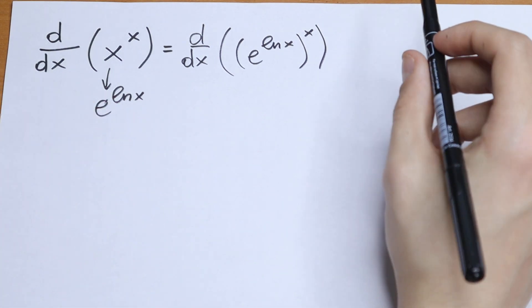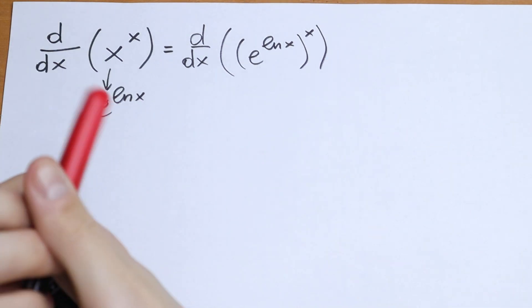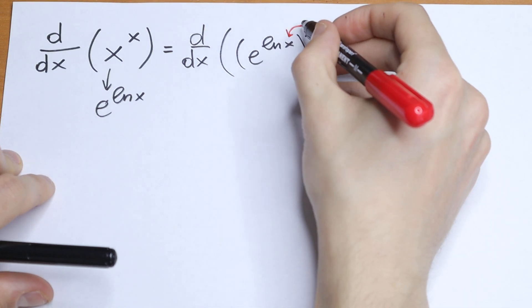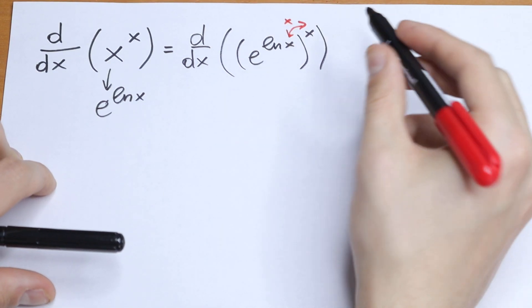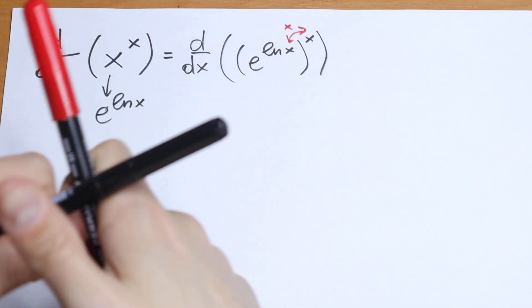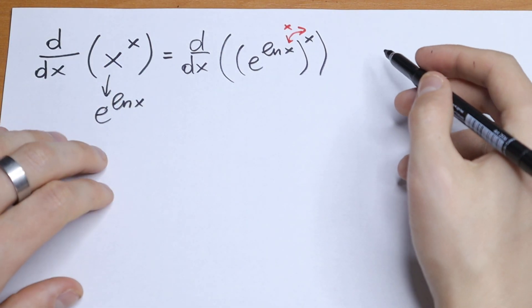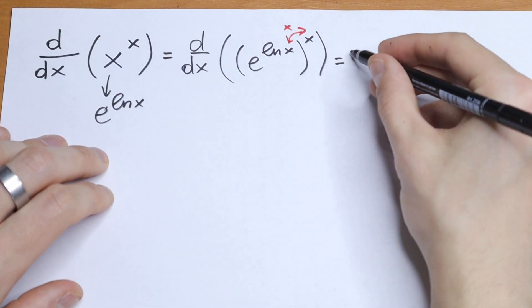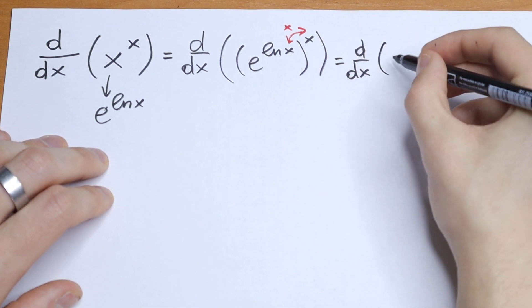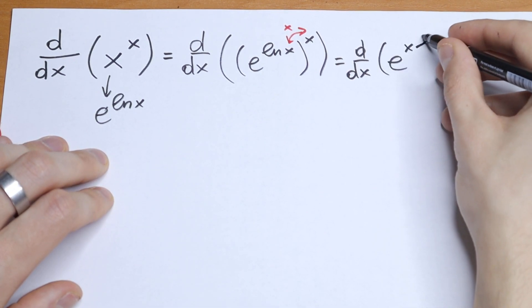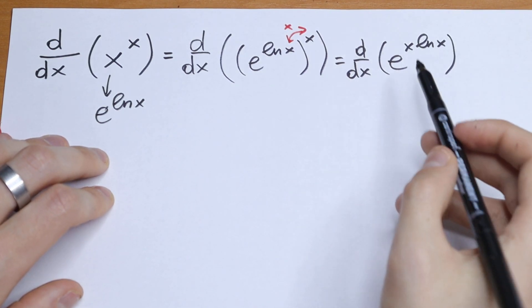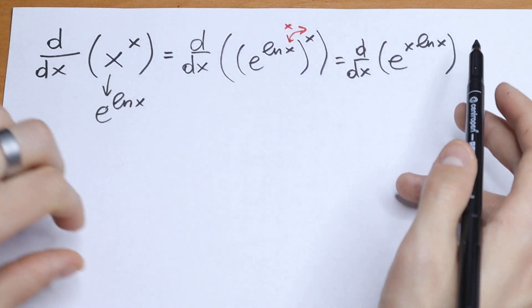What we're going to do next? We know that if we have parentheses raised to a power, we need to multiply the exponents. So as a result, d/dx will be equal to d/dx of e to the power x·natural log x. This is our simplifying trick right here.